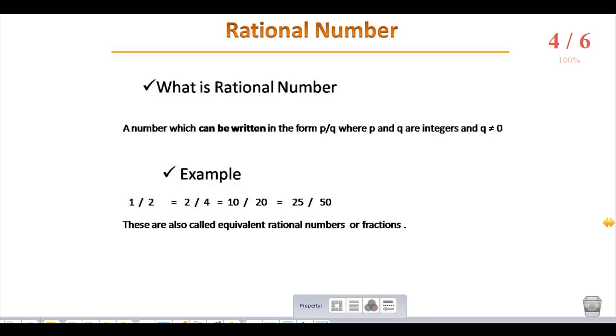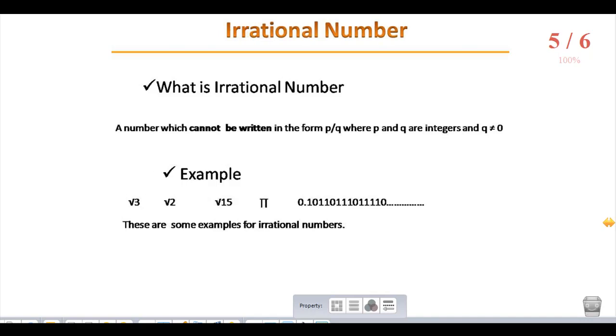Now we have a look at what is an irrational number. A number which cannot be represented in the form p by q, where p and q are integers and q not equal to zero.